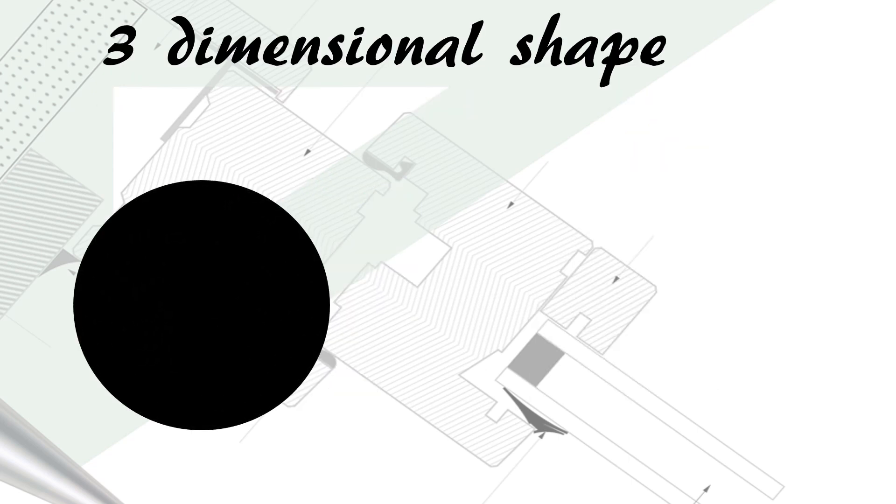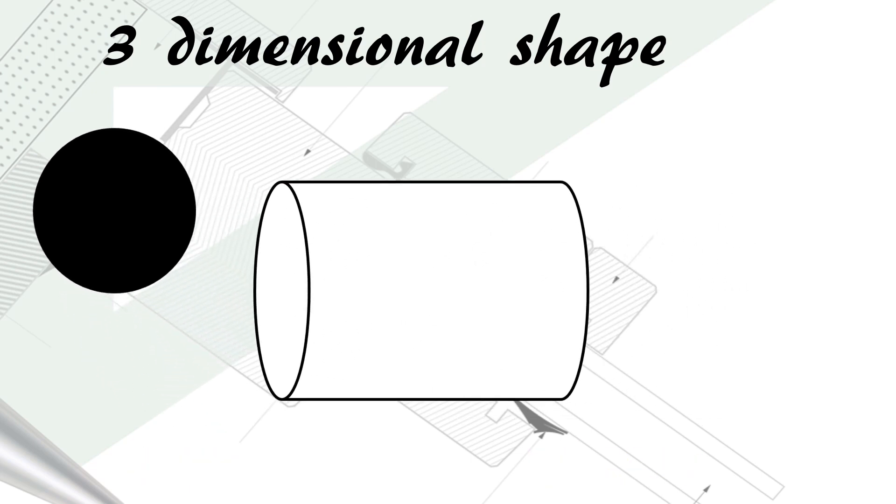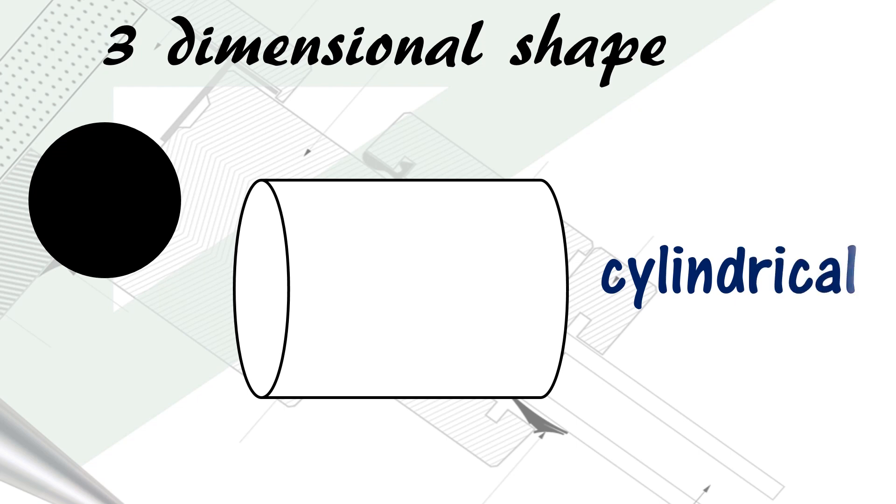Here is a two-dimensional shape, the circle. And here in three dimensions, this is called a cylinder. If things have a cylinder shape, we say it is cylindrical.